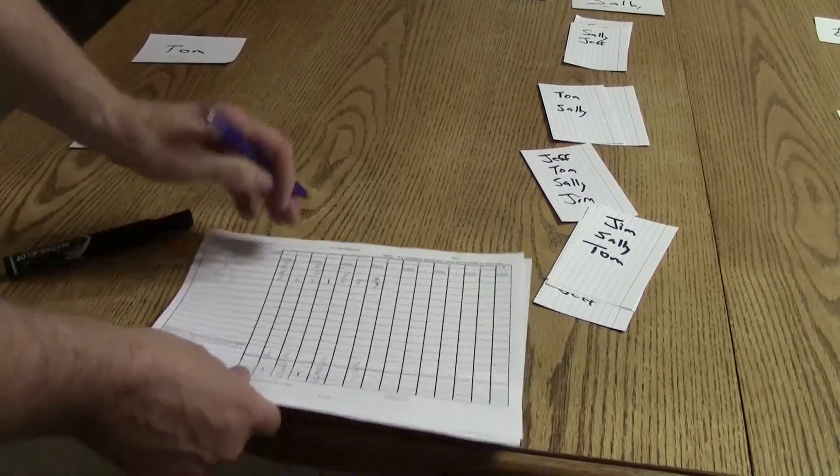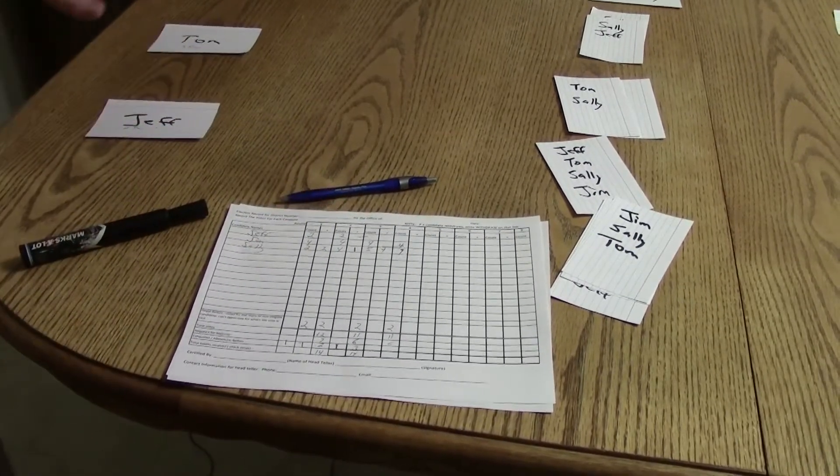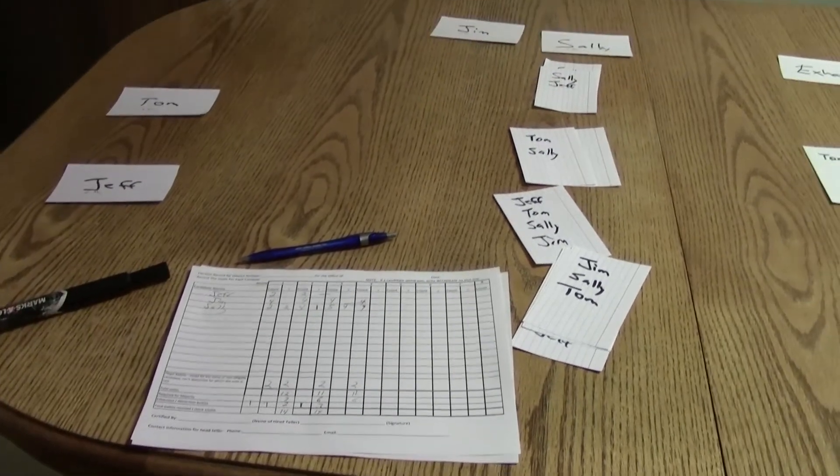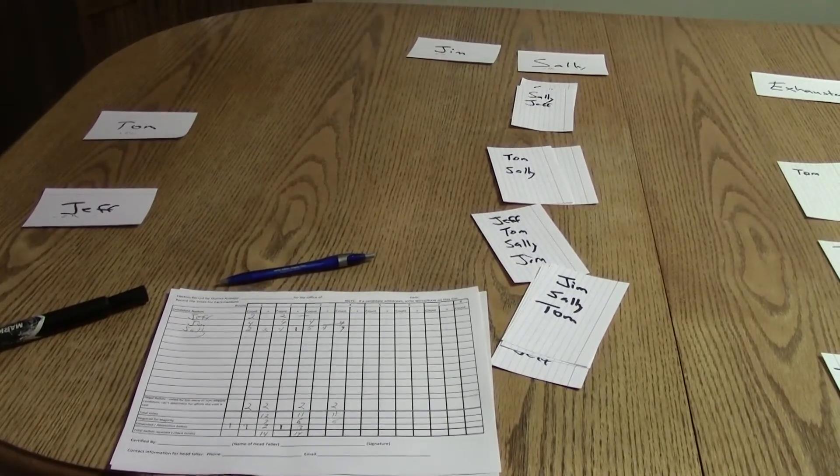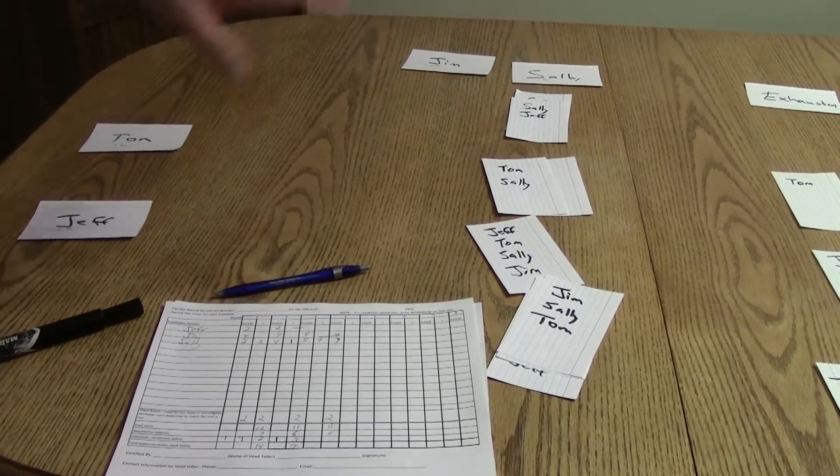So this is why if you're voting for multiple openings, you have to get your first result, then you eliminate the person who won, and you start again as though that person had been eliminated, and you continue that process.